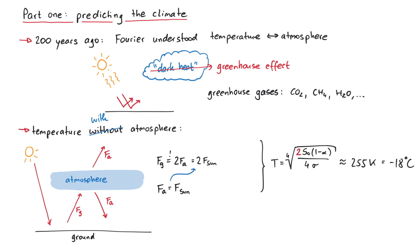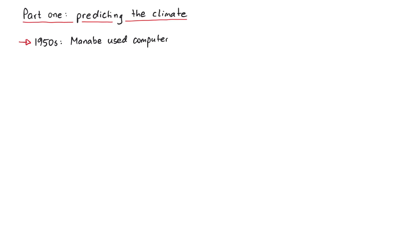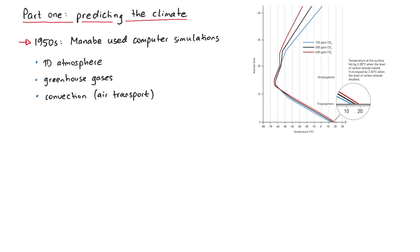Long story short, we get a factor of 2 here, so that we multiply the previous temperature by 2 to the power of 1 over 4, which yields a comfortable temperature of around 30 degrees Celsius. This is a very simple model of our atmosphere, but in the 1950s, the Japanese physicist Shukuro Manabe used computer simulations to calculate the effect of greenhouse gases in a more sophisticated model. In his model, he assumed a one-dimensional vertical slice of atmosphere and implemented not only the effects of greenhouse gases, but also vertical transport via convection, where cold air sinks down and hot air rises to the top.